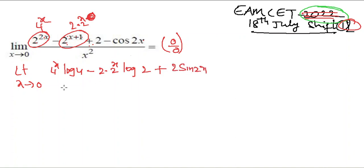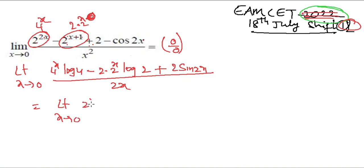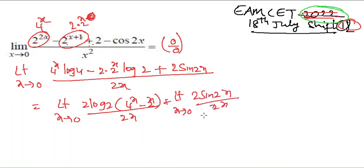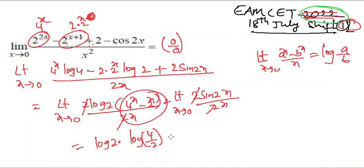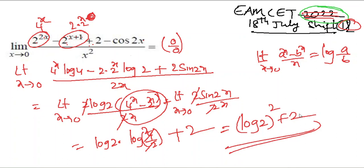Since log 4 = 2 log 2, we take 2 log 2 common from the first two terms. This gives limit x tends to 0 of (4^x - 2^x)/x plus limit x tends to 0 of sin 2x / x. Using the formula lim (a^x - b^x)/x = log(a/b), we get log(4/2) = log 2. So the answer is 2 log 2 · log 2 + 2 = (log 2)² + 2.